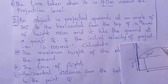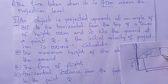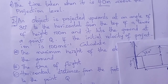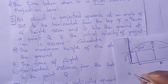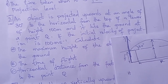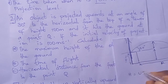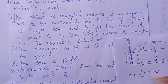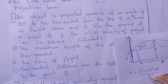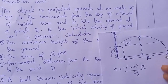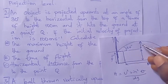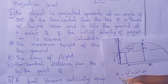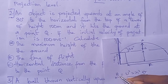They're also asking us to find the maximum height, which is from the launch point up to the peak and then from the peak down to the ground. What I find first is simply the maximum height above the launch point, using the formula H = U²sin²θ / 2g.